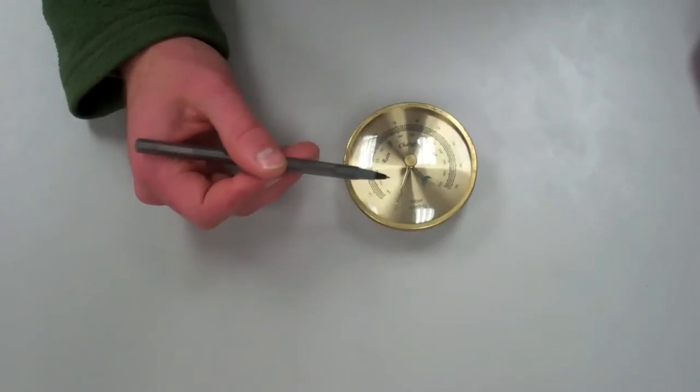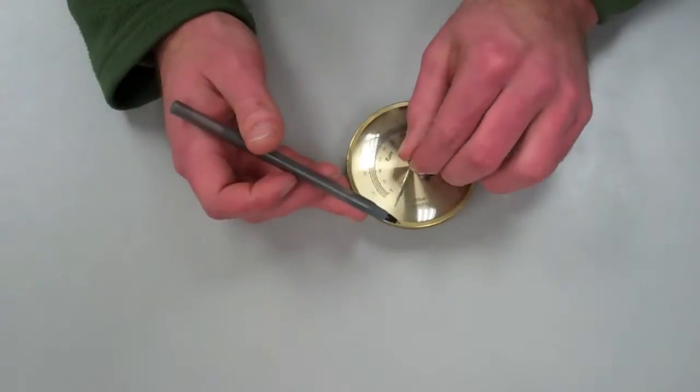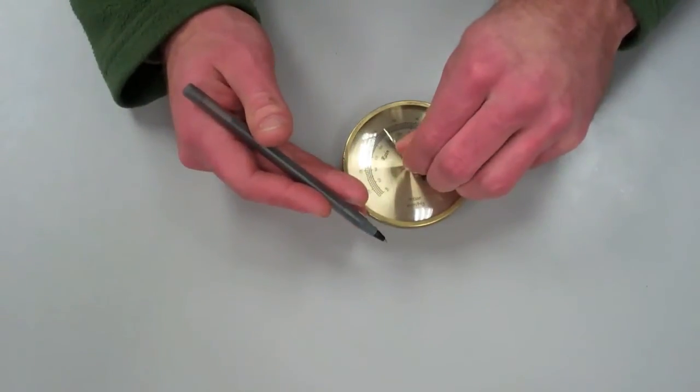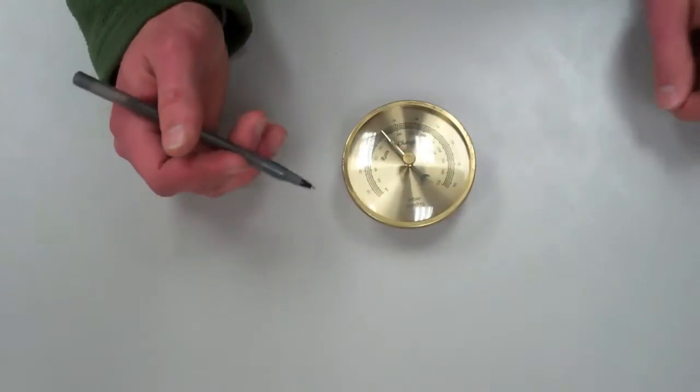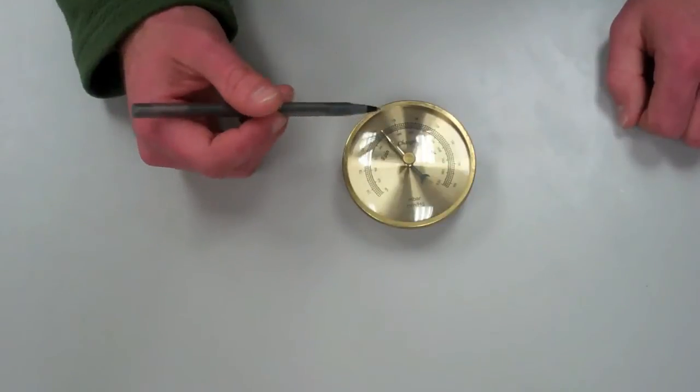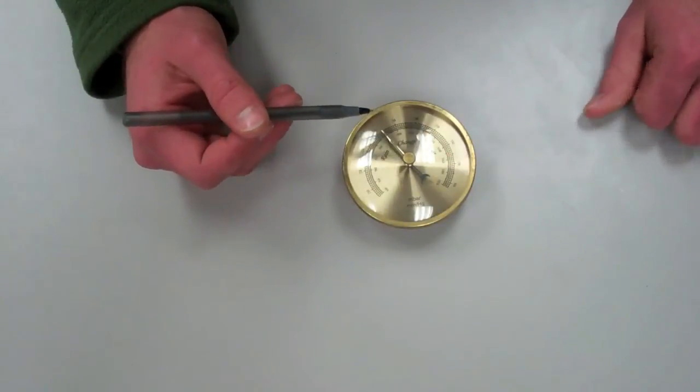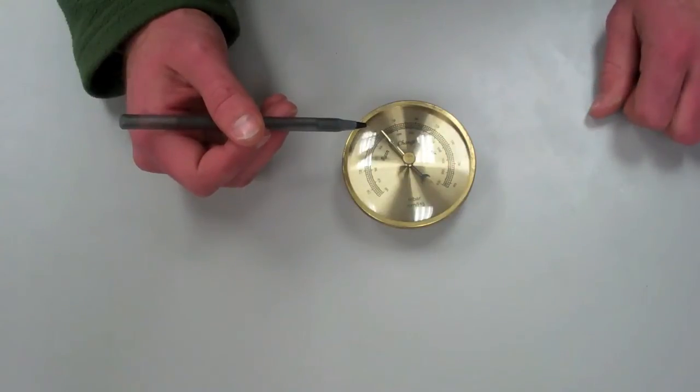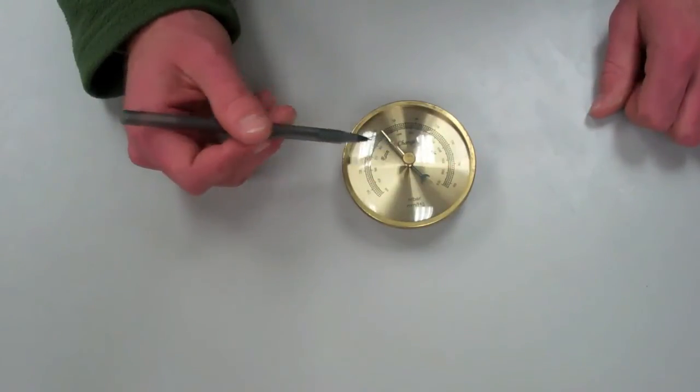There is a metal reference needle that you can move by hand to any position on the dial. This is useful for positioning on top of the black needle so that you know what the current pressure is. Then when the black needle moves, you can tell the change in barometric pressure over whatever time period has elapsed since you last set the reference needle.